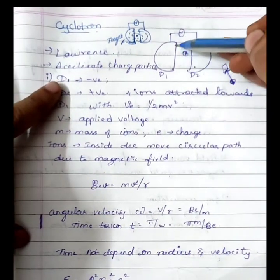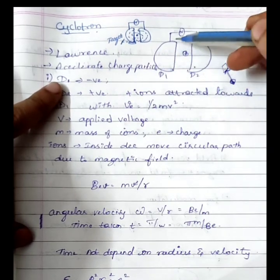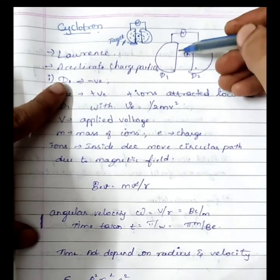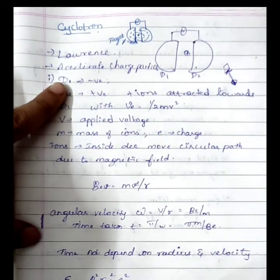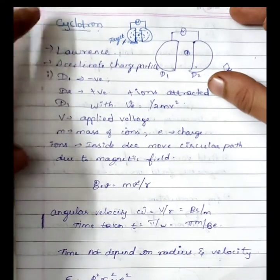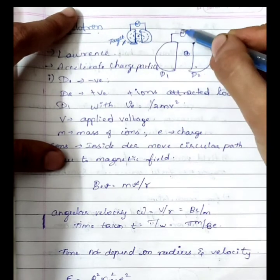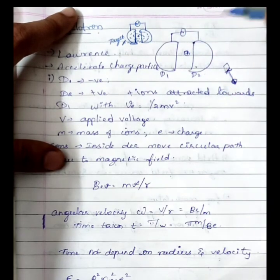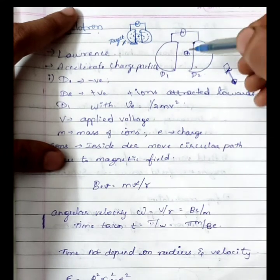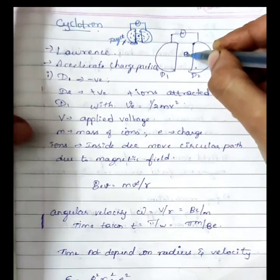This instrument is D-shaped. D1 and D2 are two hollow metal cylinders. Inside there is a hollow space — it is a vacuum. It is connected to an oscillating frequency, which will change the polarity. The positive ions are placed inside.